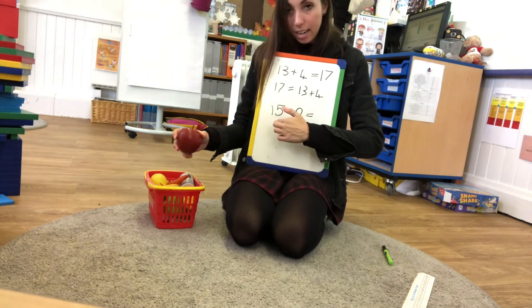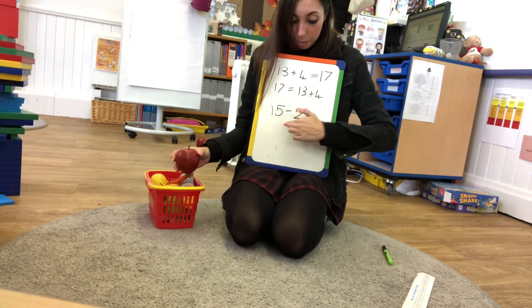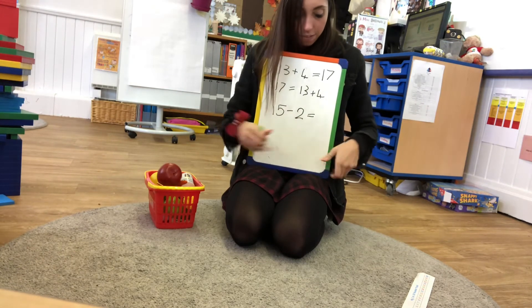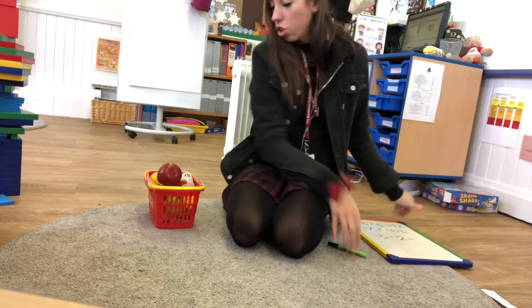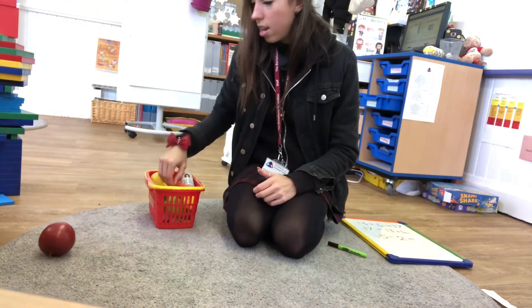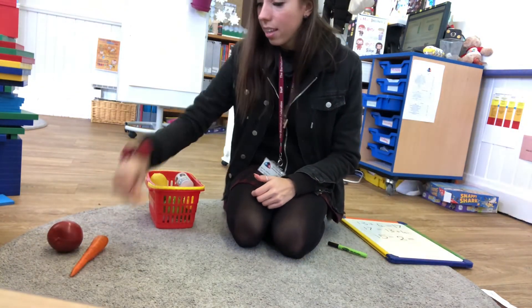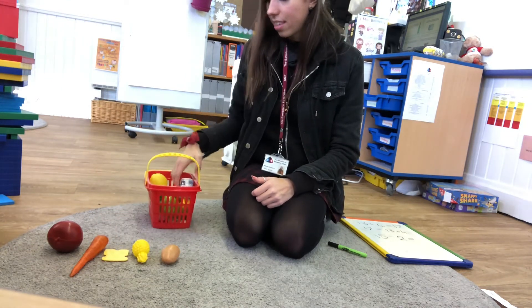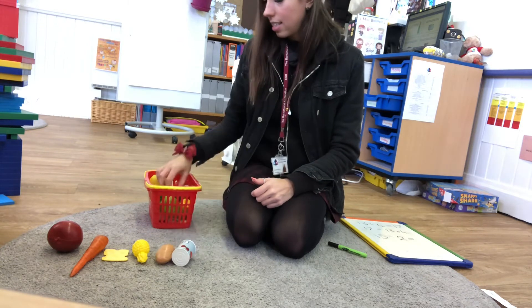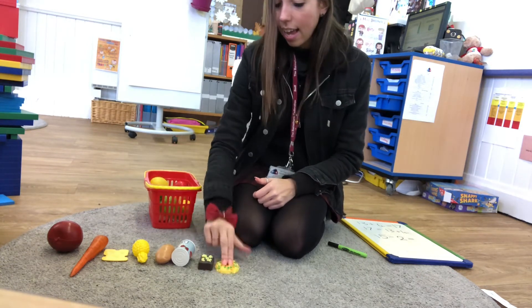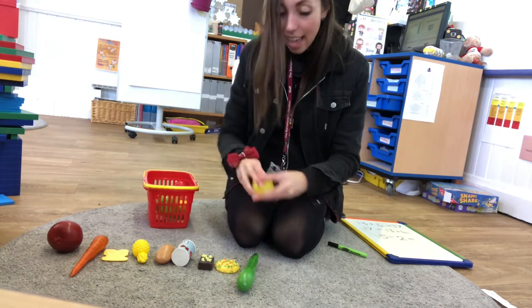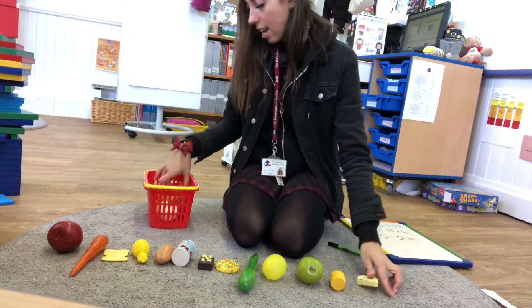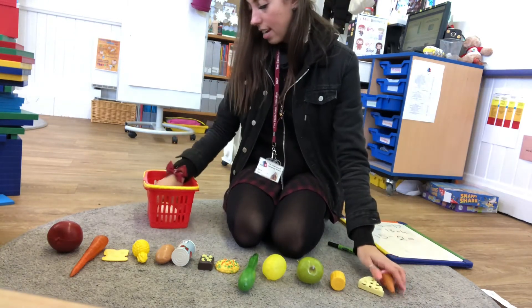So I'm going to start off with 15 — that's what I need to start with, because I need to know I'm doing 15 and then I'm going to get rid of two. Let's count out 15: 1, 2, 3, 4, 5, 6, 7, 8, 9, 10, 11, 12, 13, 14, 15.